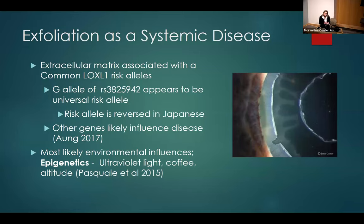How many people believe it's a genetic disorder? Actually, Lou Pasquale believes it's not a genetic disease — he thinks the risk allele is just a confounding variable. A lot of people are now believing that yes, elastin is important, but there's something else going on — it's epigenetics. There's ultraviolet light, coffee, altitude that have been associated. Something's going on with elastin production and degradation, and perhaps there's a traumatic influence, which is why we've looked at certain disorders.